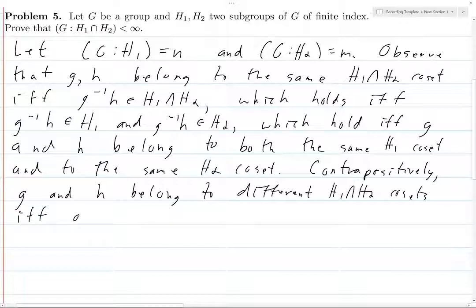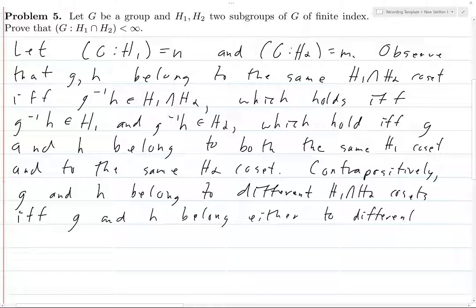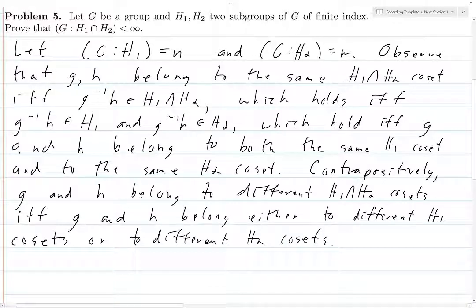So g and h belong to different H1 intersect H2 cosets if and only if g and h belong either to different H1 cosets or to different H2 cosets. They can't both belong to the same H1 coset and to the same H2 coset because that would mean that they belong to the same H1 intersect H2 coset.